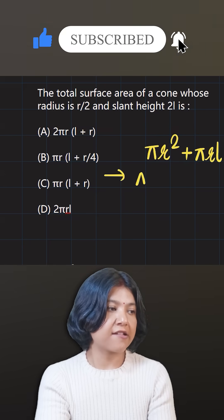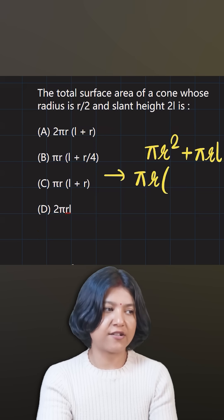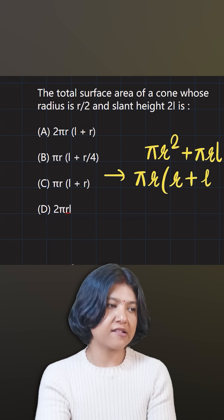Now you can write this formula as pi and r commonly factored out, giving me pi r, whole r plus l.